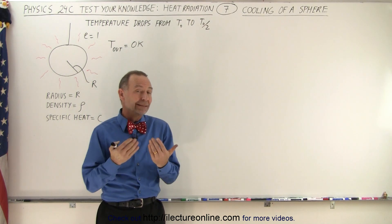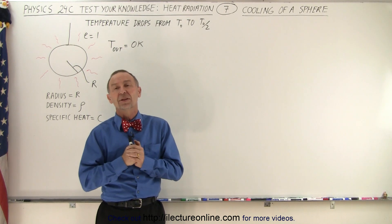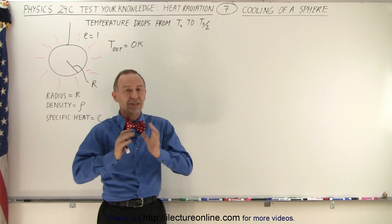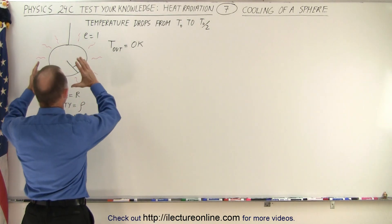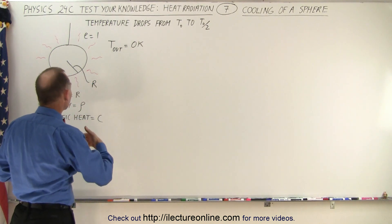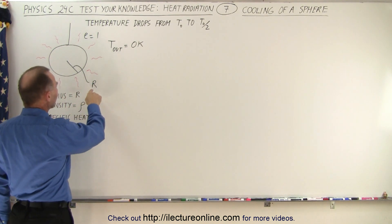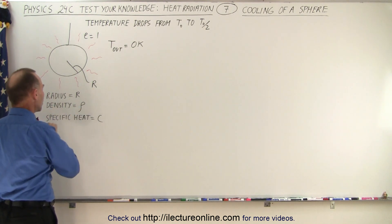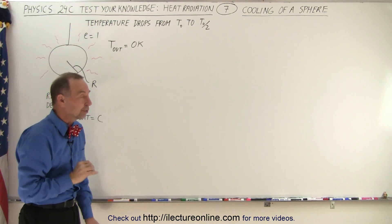But that's not the case here. We have a different scenario. Here we have a sphere with a certain mass that can be calculated because we're given the radius as R and the density as ρ. We're also told that the specific heat of the sphere is C.